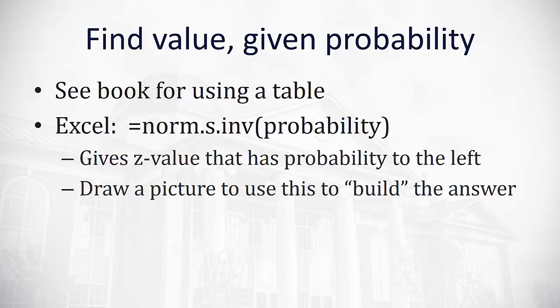So norm.s dot inverse, open a parenthesis and type in the probability that we want. That probability needs to be the probability to the left of our value. So sometimes we'll have to subtract from 1 to make sure we put the correct value in there. And then we'll use our picture to build this answer.